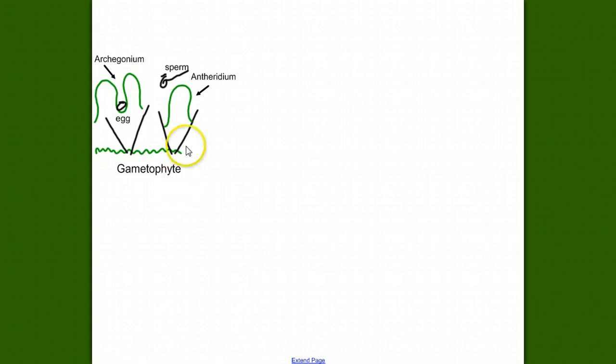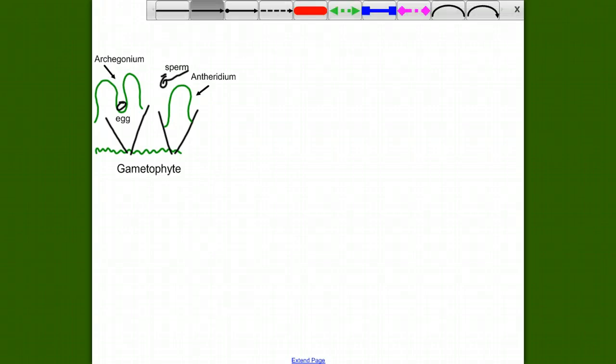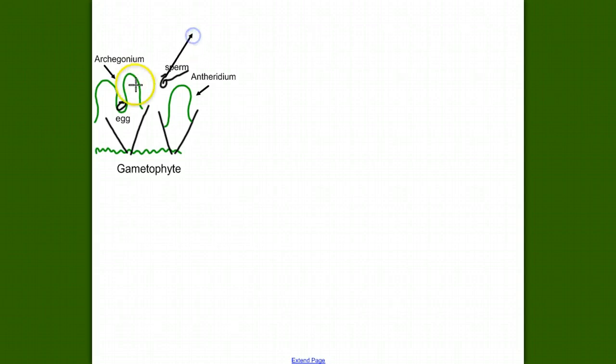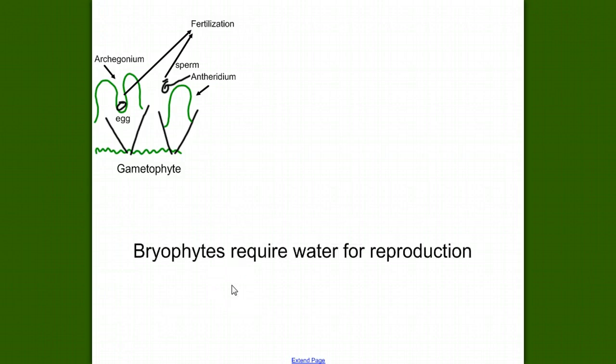What are gametes used for? Fertilization. The sperm is going to fertilize the egg. We're going to bring it over here, show fertilization happening. The question though is, how does the sperm get to this egg? The answer is, it's going to swim. Remember, we're not talking about a great distance. We zoomed in tight here. But this sperm has to swim to this egg. This brings us to a very important point. Bryophytes require water for reproduction. While mosses are terrestrial plants, they have not lost this property of their aquatic ancestry. This is a leftover remnant of their aquatic nature.